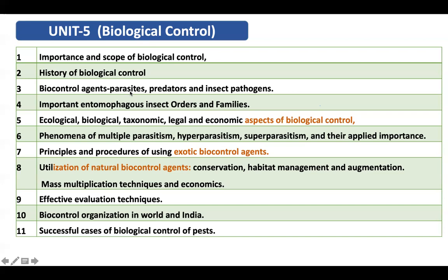Some famous parasitoids you might know belong to Trichogrammatidae and Chalcididae families, among many others. Predators like the praying mantid kill and devour insects immediately; wasps also eat caterpillars. For insect pathogens, there are many types — viruses like NPV, bacteria, nematodes, fungal pathogens, and so on.